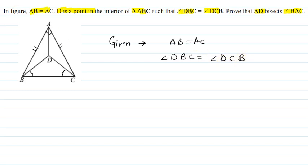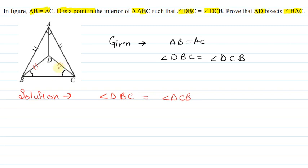Now let's see the solution. Since angle DBC is equal to angle DCB, these two angles are equal to each other. The side opposite to angle DBC is CD, and the side opposite to angle DCB is BD. So BD will be equal to CD. I will use this property here — side opposite to equal angles.